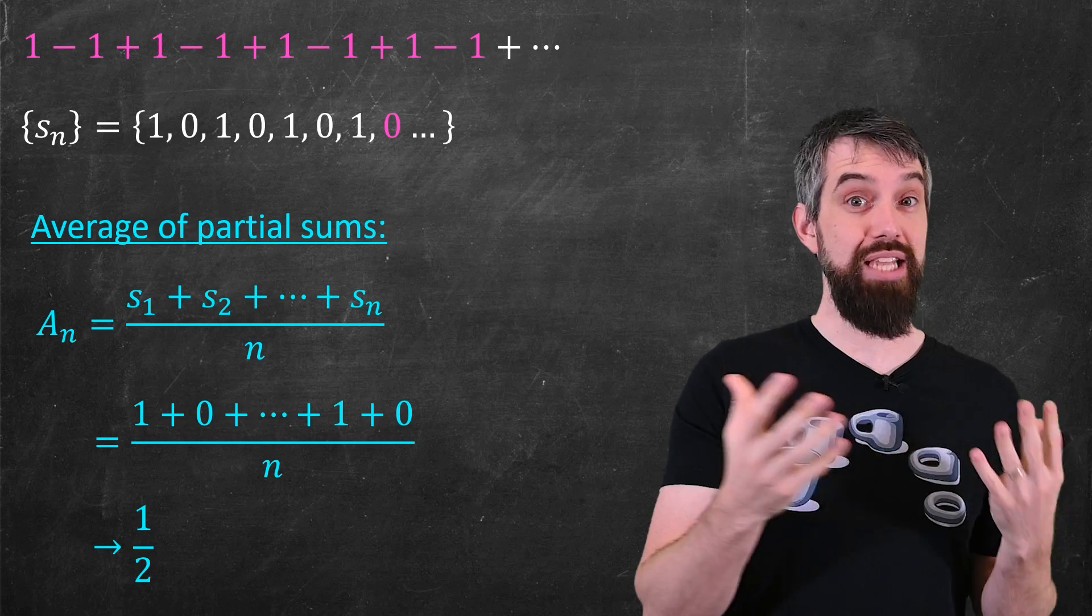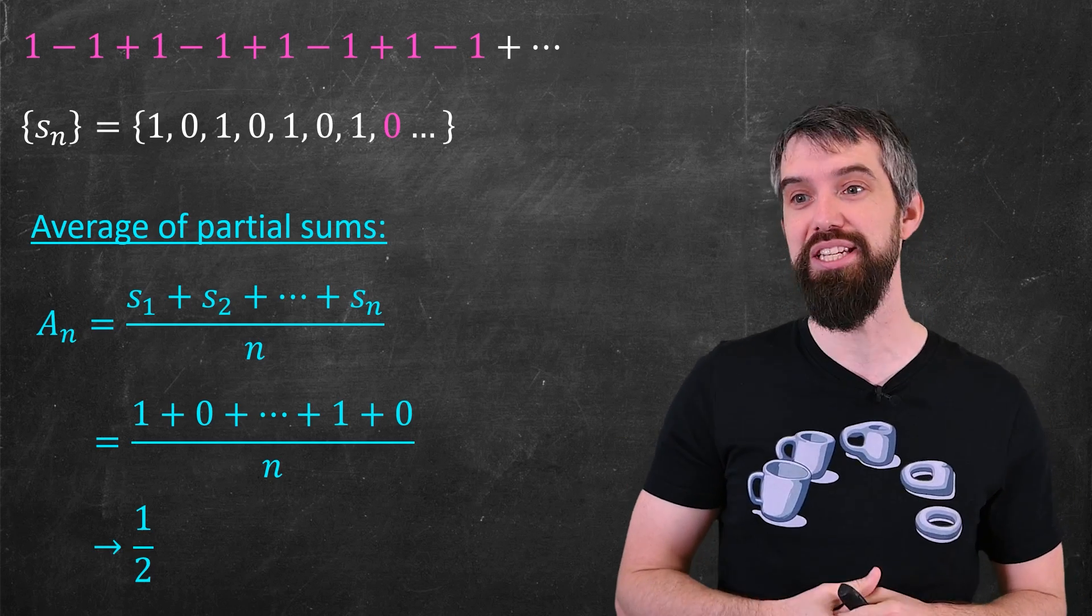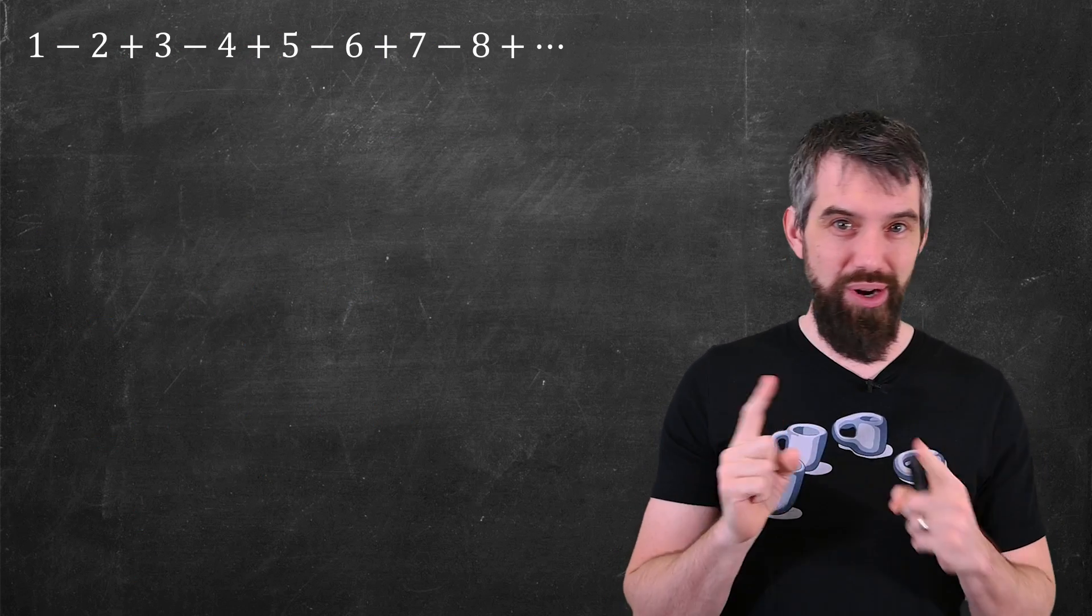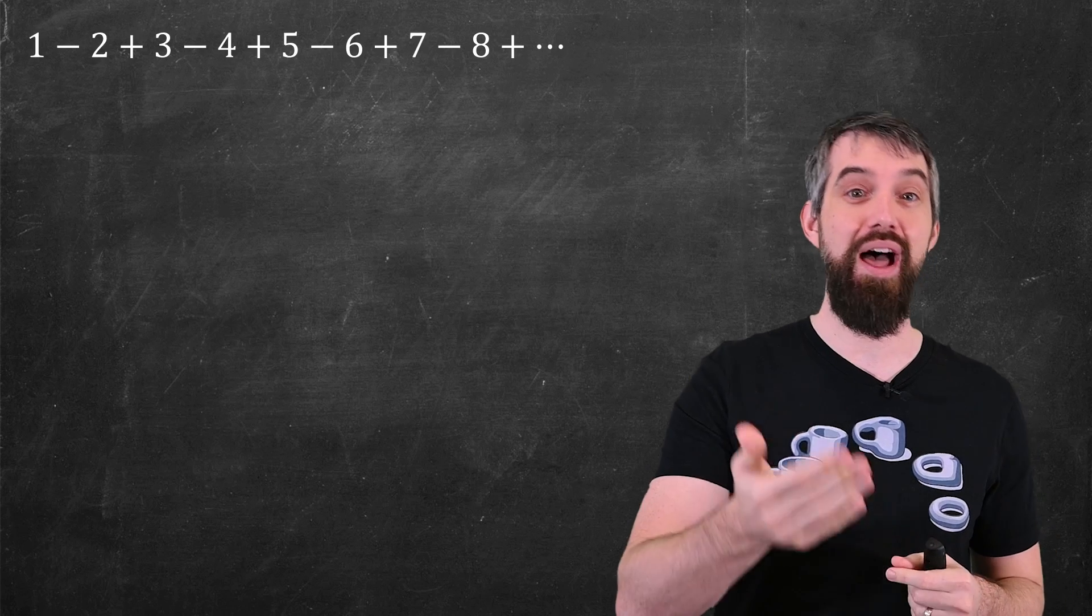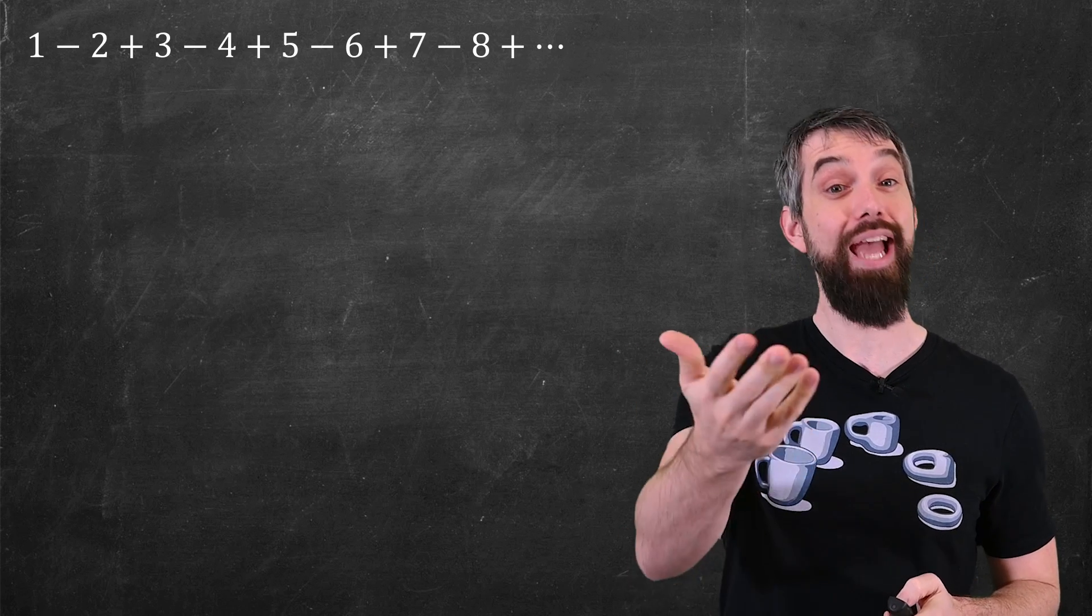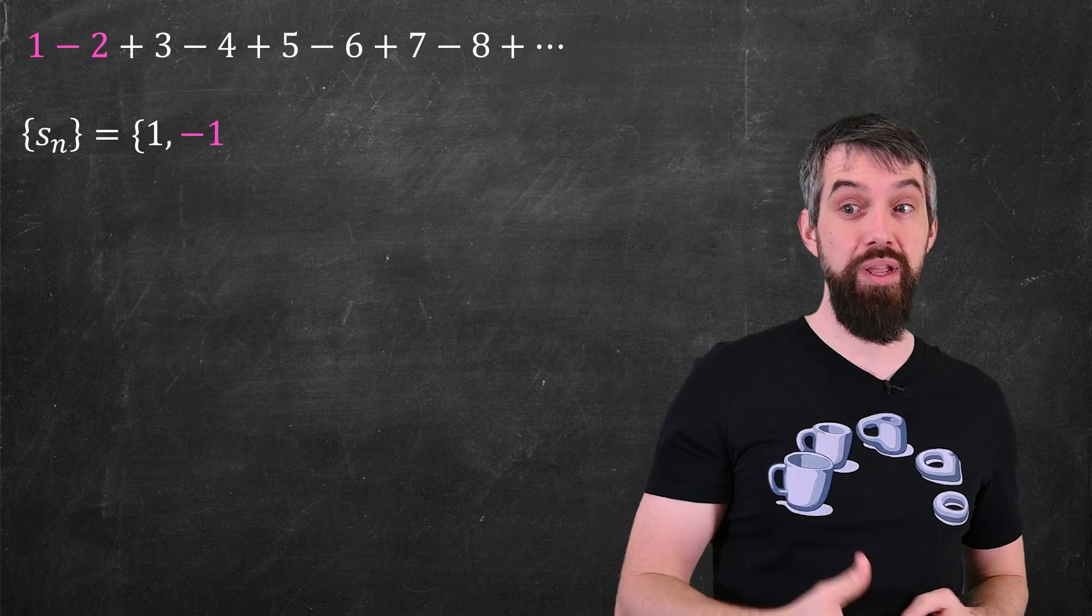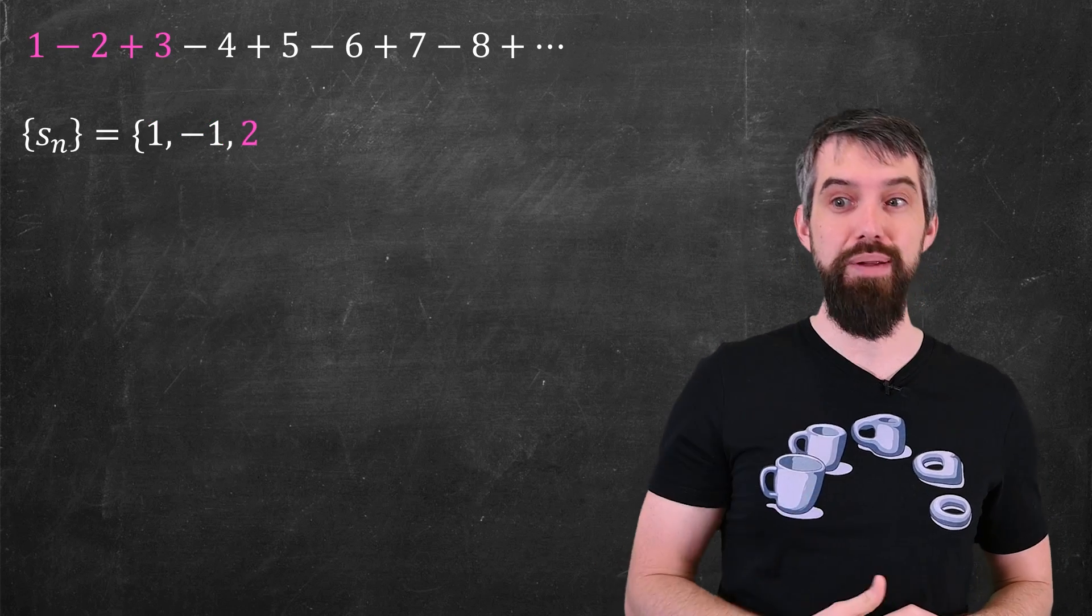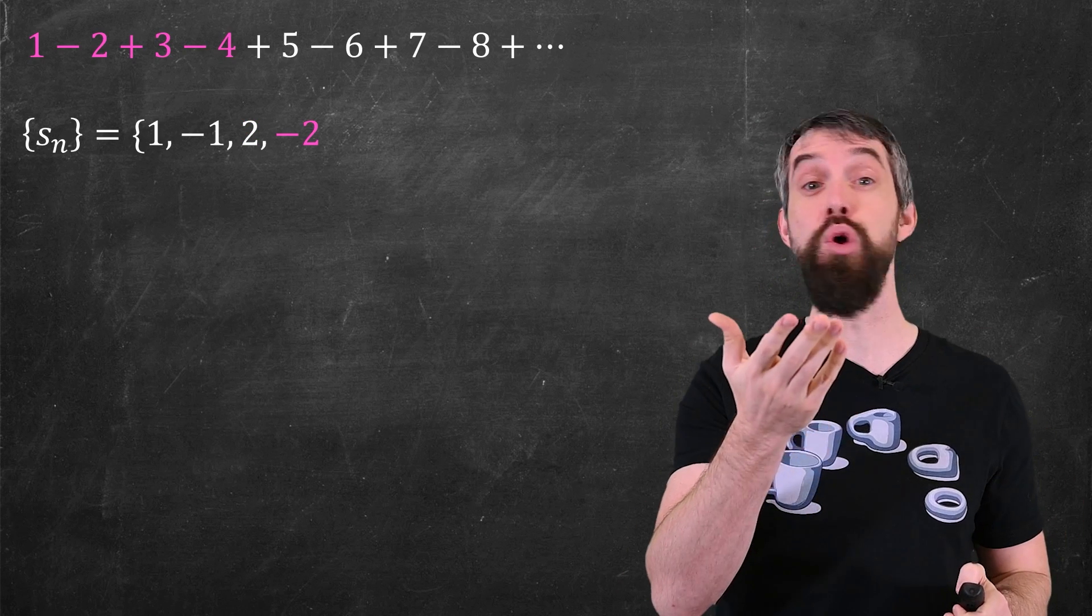Now, some divergent series have this property, some don't. For example, I'll give you a more egregiously divergent one, similar in its alternating signs, but now it's 1 minus 2 plus 3 minus 4 plus 5 and so forth. So if I look at its partial sums, okay, it starts with 1, subtract 2, you get to minus 1. You add 3, you get to 2. Subtract 4, you get to minus 2. So it's like 1 minus 1, 2 minus 2. The pattern keeps on going. 3 minus 3, 4 minus 4.